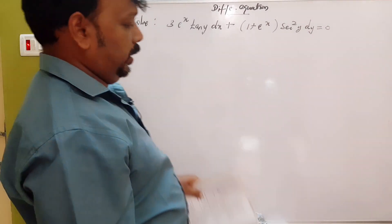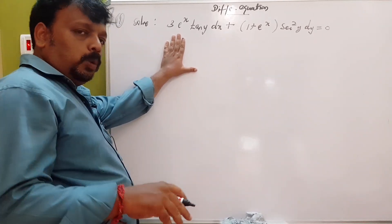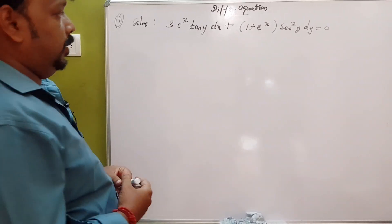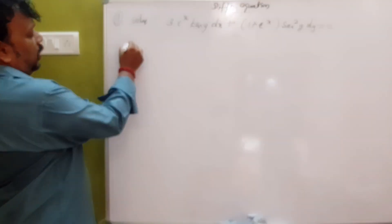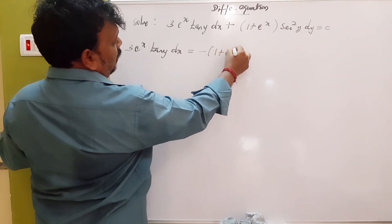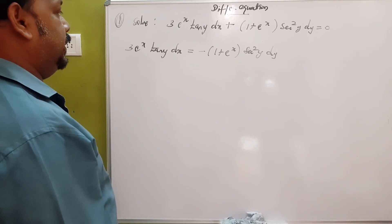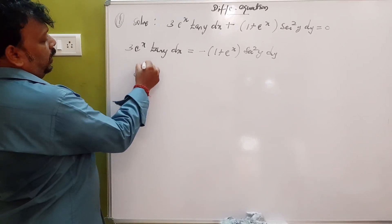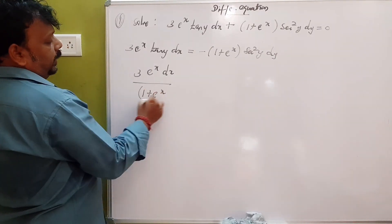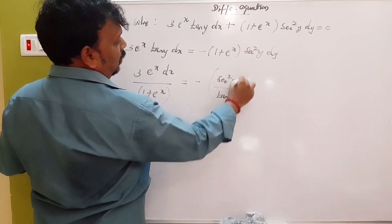This is a variable separable equation — it is not homogeneous. We separate terms: bring 3 times e to the power x dx over 1 plus e to the power x on one side, and minus sec squared y over tan y, dy on the other side.